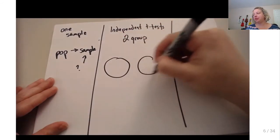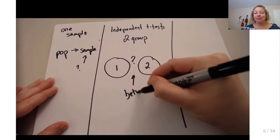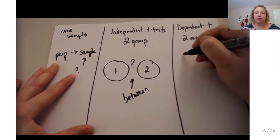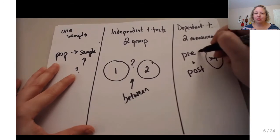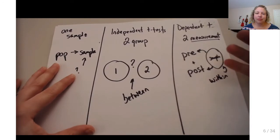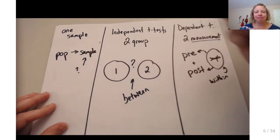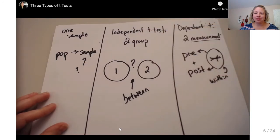In an independent t-test, there are two groups — group one and group two — and we're trying to see what the difference is between them. The difference is located between the groups. We also have dependent t-tests, where there are two measurement points — often a pre- and post-test using the same sample of people — comparing them on their first and second measurement to see if there is a difference within the sample before and after something was done.